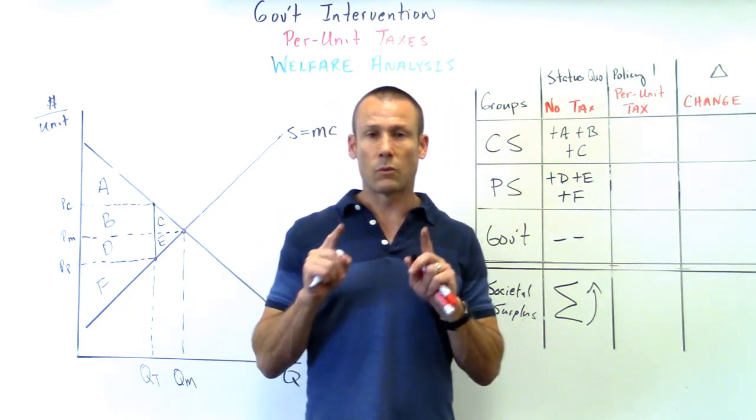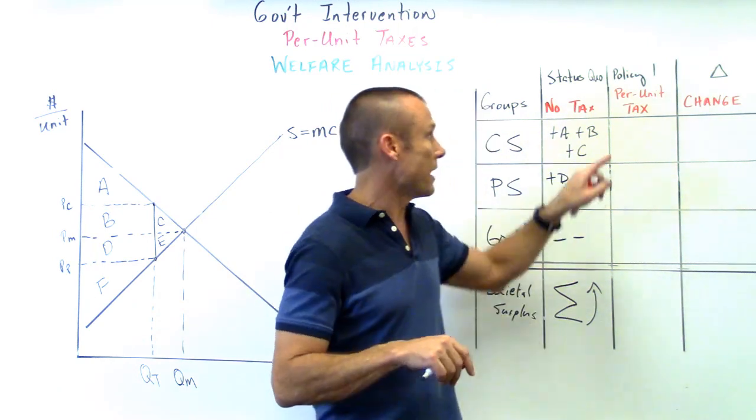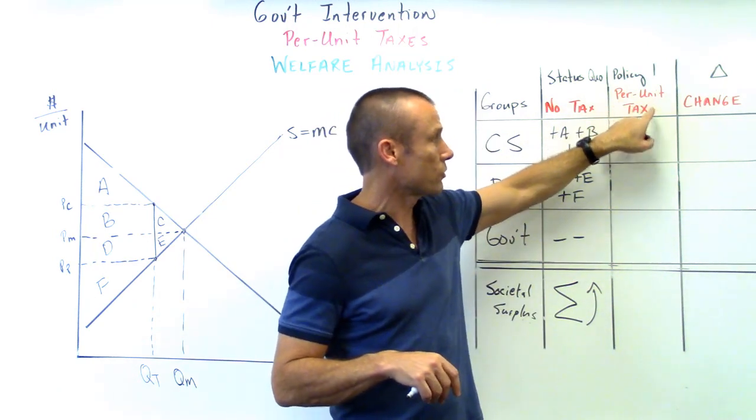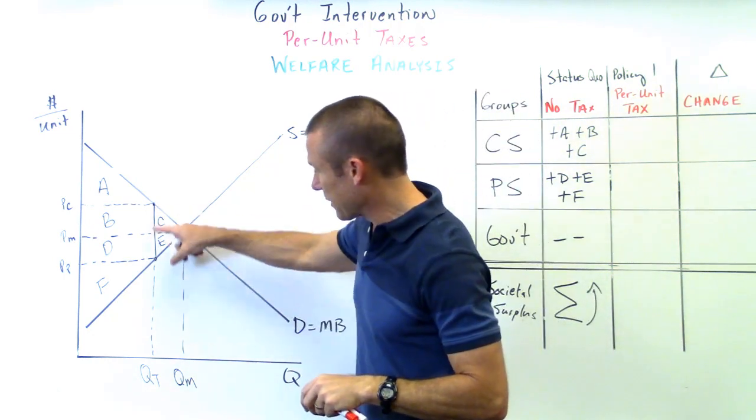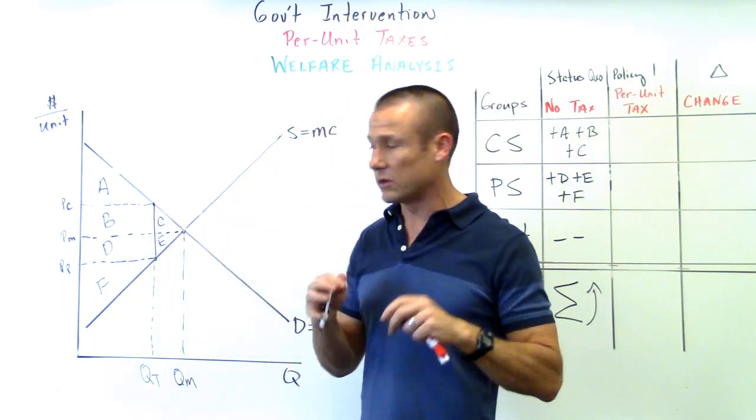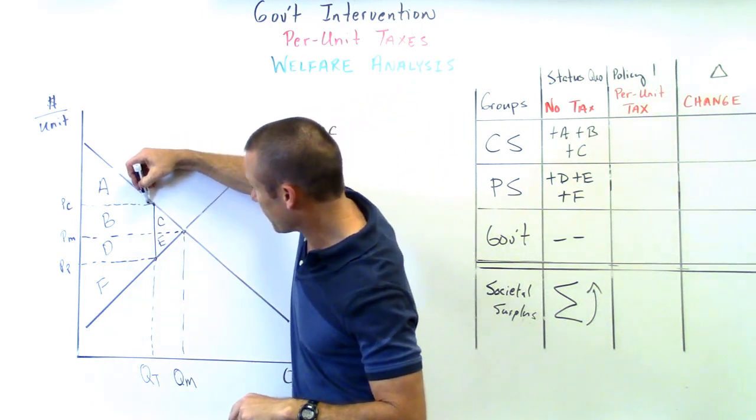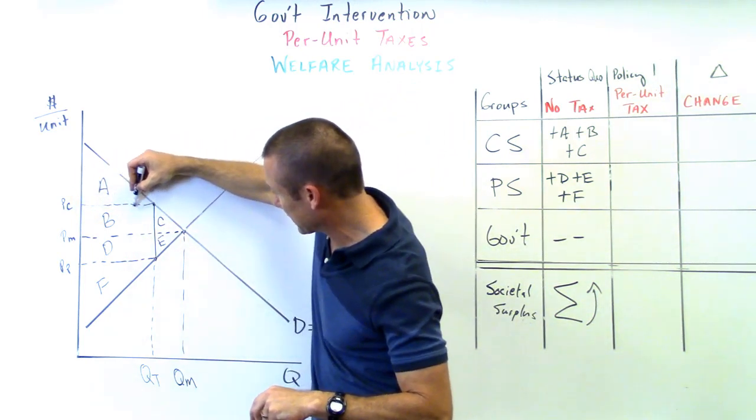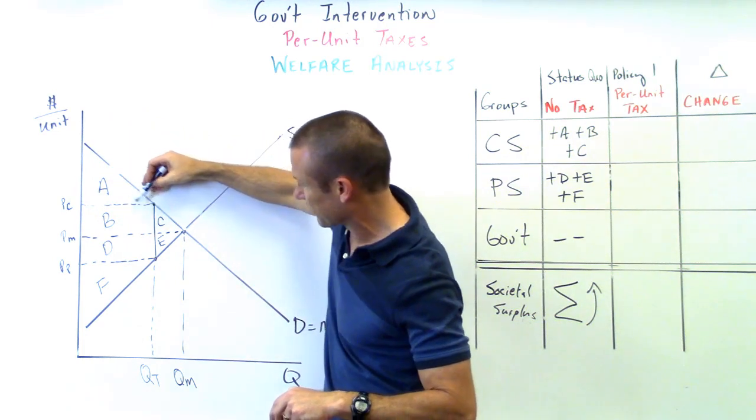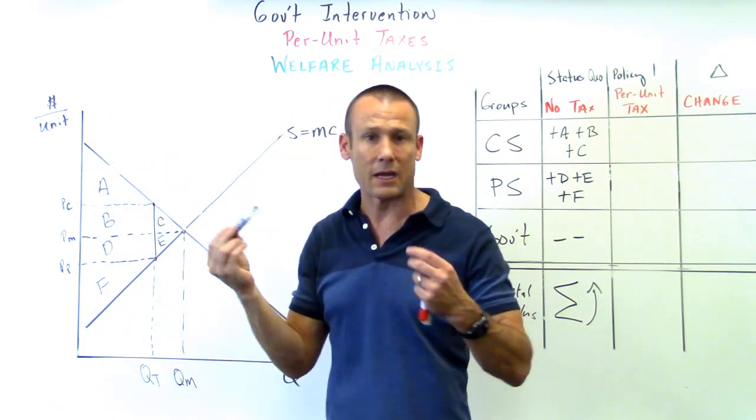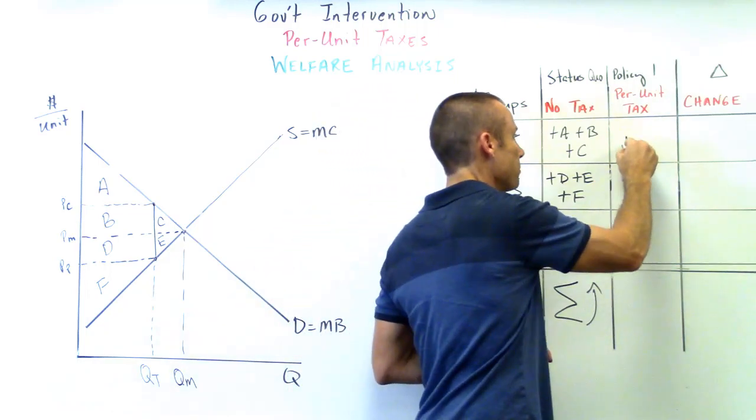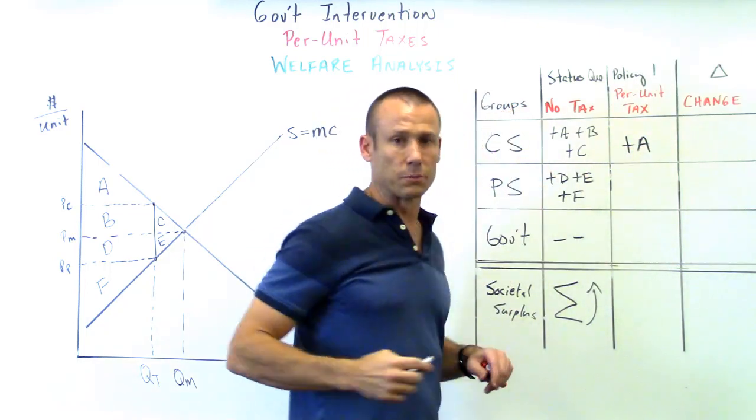Now we come in and we put in a per-unit tax as a government intervention. Now the tax wedge is viable, it's doing something. Price consumer, demand curve - the consumer's only going to buy that much. Plus a, that's all we're getting. Look at that, consumer surplus shrinking.